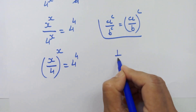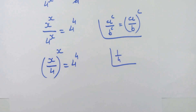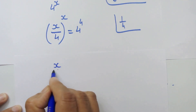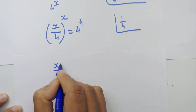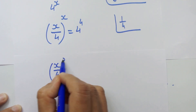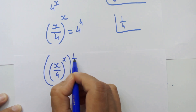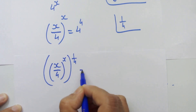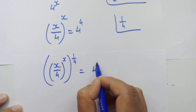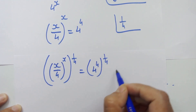Now let's raise 1 upon 4 as an exponent on both sides. So we have x upon 4 whole raised to x, whole raised to 1 upon 4, is equal to 4 raised to 4, whole raised to 1 upon 4.